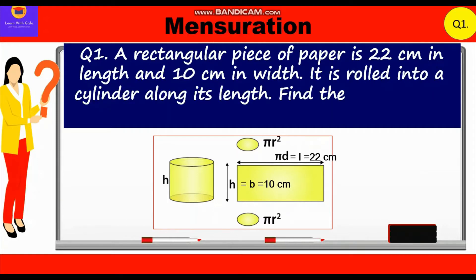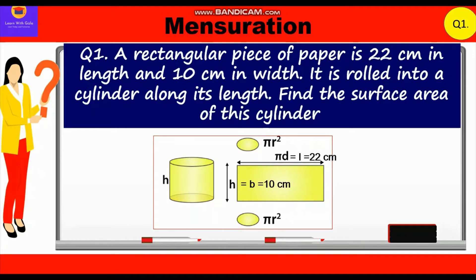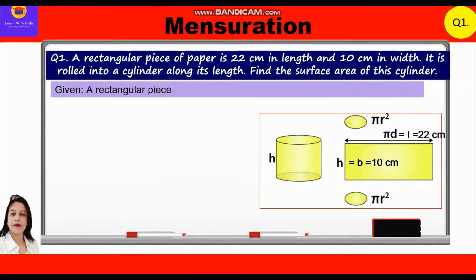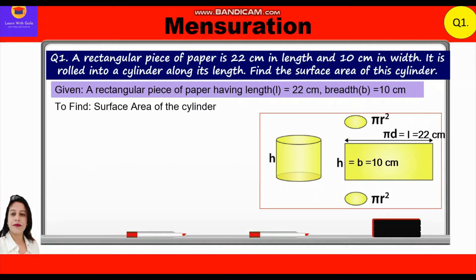Given: a rectangular piece of paper with length 22 centimeters and breadth 10 centimeters. We have to find the surface area of the cylinder, that is the curved surface area, as it is a hollow cylinder without top and bottom.